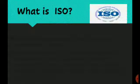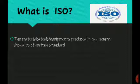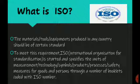What is ISO? ISO - International Organization for Standardization. The materials, tools, and equipment produced in any country should be of certain standard. To meet this requirement, ISO is started and specifies the units of measurement,